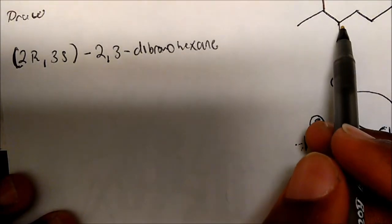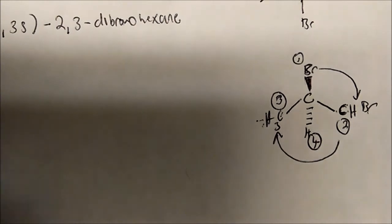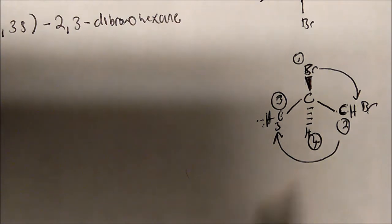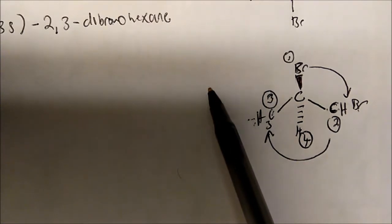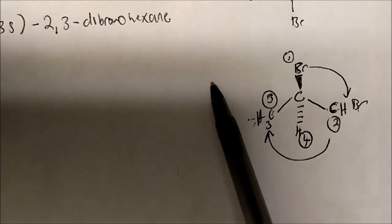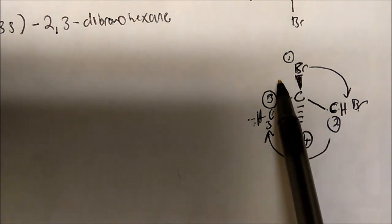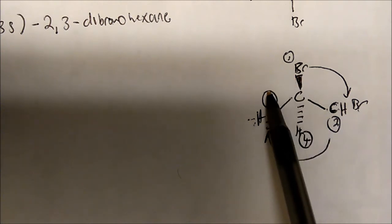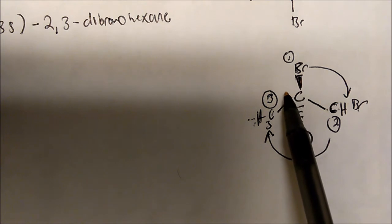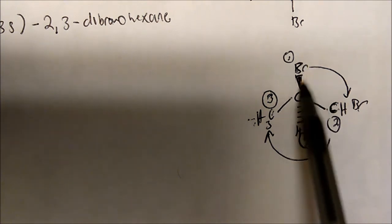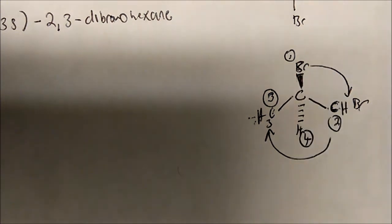So now we've got to figure out how to make carbon 3 S. Well, a lot of times if you have both chiral centers adjacent to each other, all you've got to do is just switch your lowest priority group from a wedge to a dash or vice versa. In this case, our highest priority group is coming out at you — it has a wedge — so I'm going to change it to a dash and we should get an R.